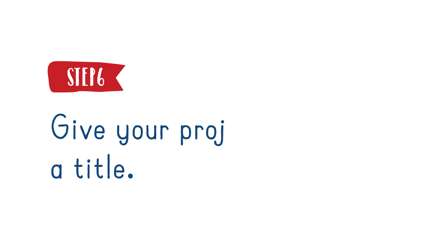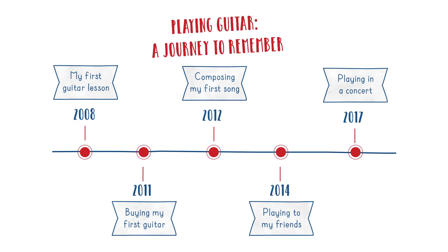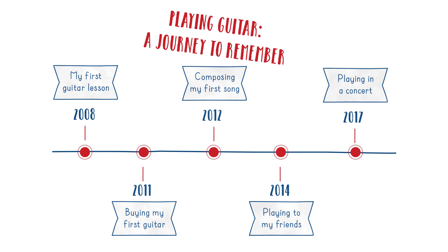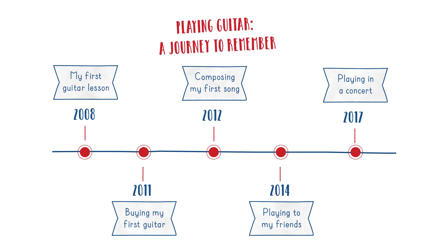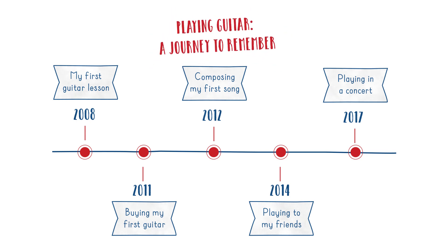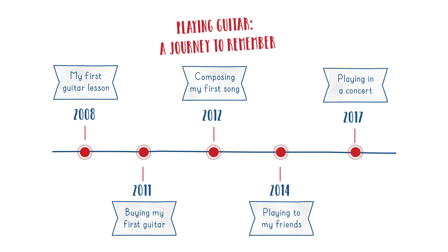Step 6: Give your project a title. Choose an engaging title that tells the viewer what your timeline is about. For example, don't title your project NASA. Instead, choose a title like NASA the Quest for the Moon.